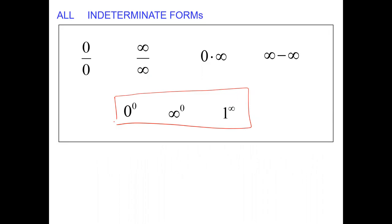Of course, we know that behind the zeros, infinities, and 1, we do have a function that is approaching these values respectively. Infinity is not a number — that's the reason that the forms that include infinity are indeterminate, undefined at the moment. We have to rewrite them to the form of the quotient: 0 over 0 and infinity over infinity, and then apply the L'Hôpital rule.